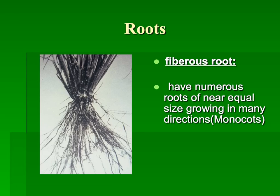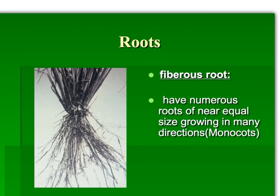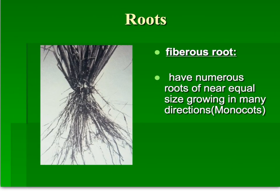For roots, make sure that you are able to determine a dicot root from a monocot root. Monocots will have a fibrous root system. With fibrous roots, you'll notice that we have many small roots of near equal size, and we can see that right along here. So monocots have fibrous roots.